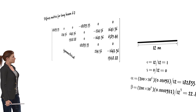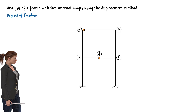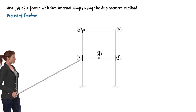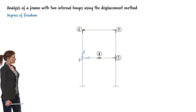Next, we need to define the degrees of freedom at the nodes of the structure. Since nodes 1 and 2 are fixed, they will not undergo displacement or rotation; therefore, no degrees of freedom are associated with the supports. Node 3 can displace in the horizontal and vertical directions and rotate, so we define three degrees of freedom for the node, numbered 1 through 3.